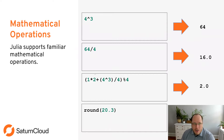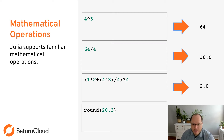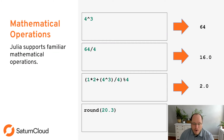First things first — basic mathematical operations. This allows you to do basic math. You can see four to the third gives 64. You can do division, modulo, and it follows order of operations. You'll get a float coming out of modulo. And then you can also round numbers just like in most other languages — rounding 20.3 gives 20. I recommend trying out all of these as we go along.